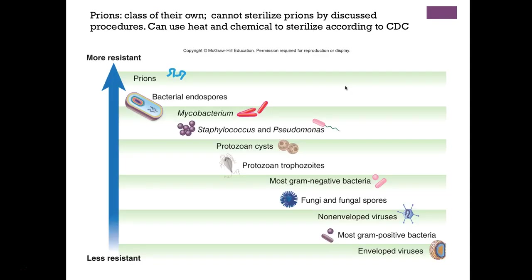Our primary targets of microbial control are microorganisms that cause infection or spoilage. Bacterial endospores are the most resistant of all bacteria. From least to most resistant: enveloped viruses, gram-positive bacteria, non-enveloped viruses, fungi, gram-negative bacteria, protozoa, specific organisms like Staphylococcus, Pseudomonas, and Mycobacterium — which carry mycolic acid giving a waxy coating making them harder to kill — and then bacterial endospores.